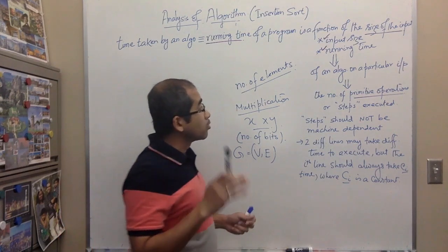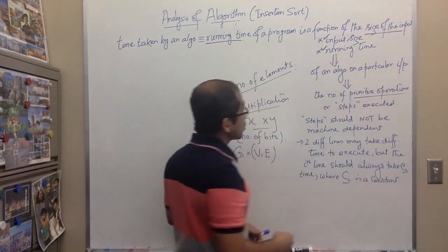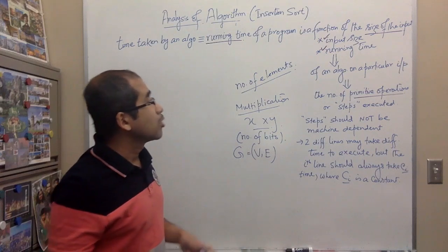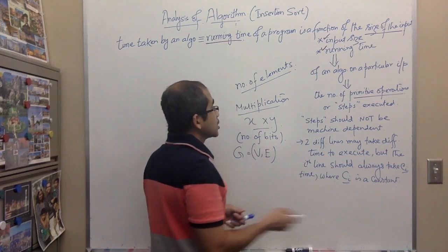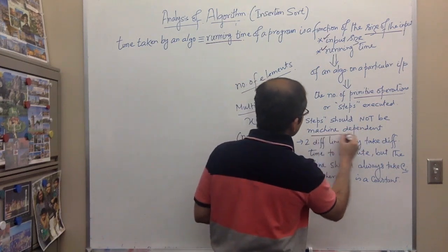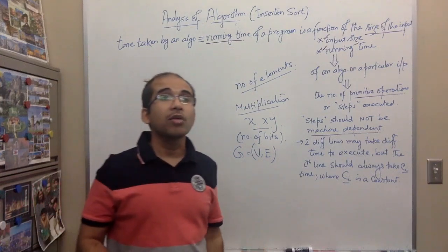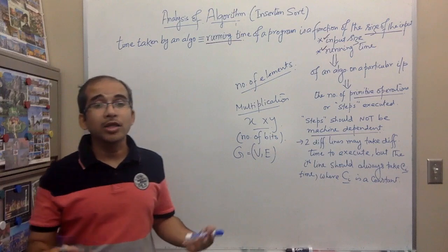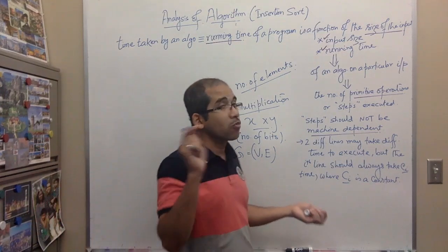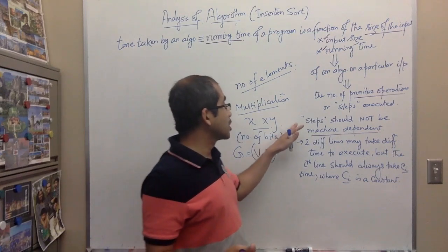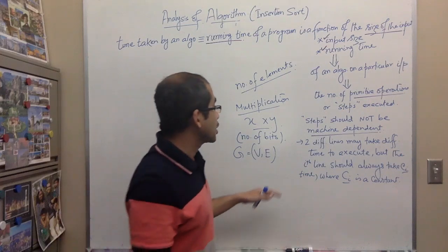Each primitive operation takes some constant amount of time. For a particular algorithm on a particular input, we count the primitive operations or steps required. These steps should not be machine dependent - if a machine has a sorting instruction that other common machines do not have, you cannot count that as a step. Steps should be machine independent as much as possible.